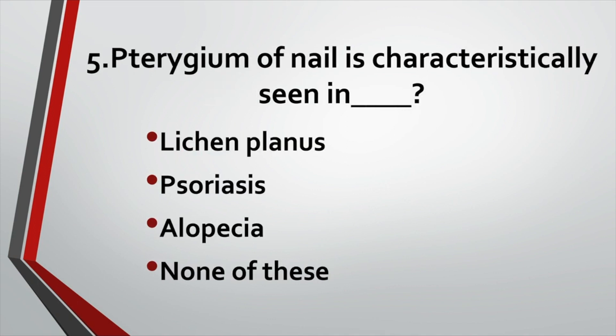Pterygium of nail is characteristically seen in: Option A: Lichen planus. Option B: Psoriasis. Option C: Alopecia. Option D: None of these. Answer: Option A, Lichen planus.